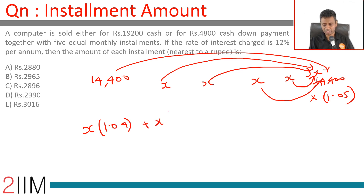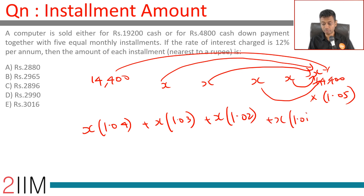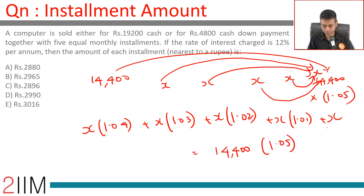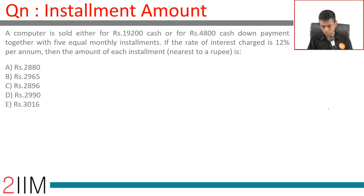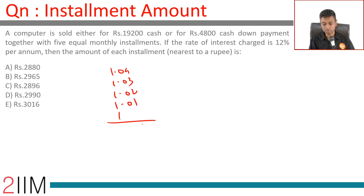So the equation becomes: x(1.04 + 1.03 + 1.02 + 1.01 + 1) = 14,400 into 1.05. Adding those factors gives 5.10, so 5.1x equals 14,400 into 1.05.